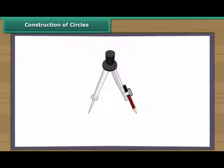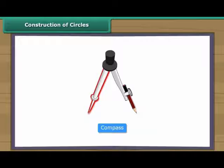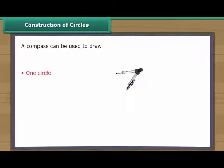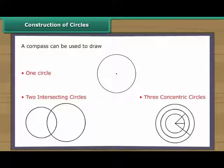We draw circles with the help of a compass. A compass is an instrument with two arms. While one arm remains fixed, the other arm with the pencil moves freely. We will use a compass to draw one circle, two intersecting circles, and three concentric circles.